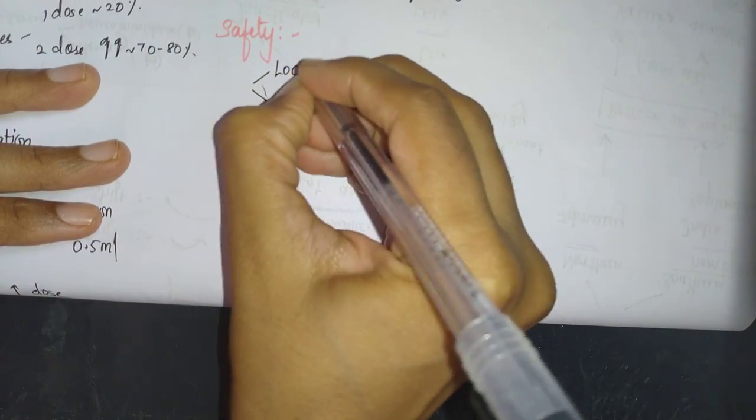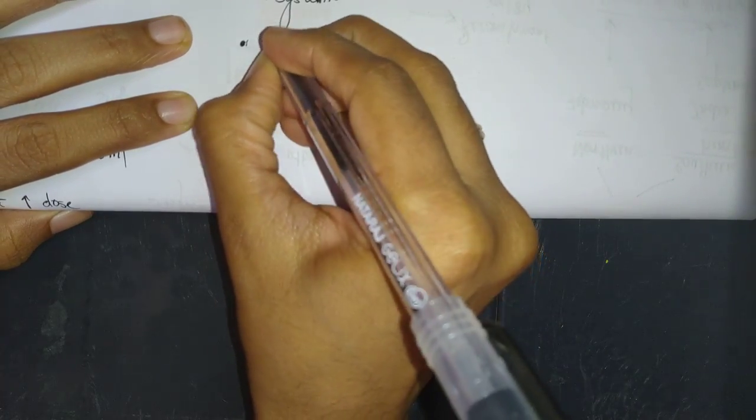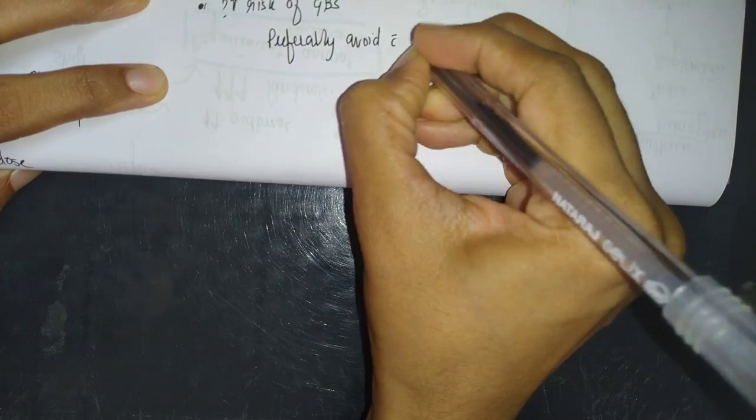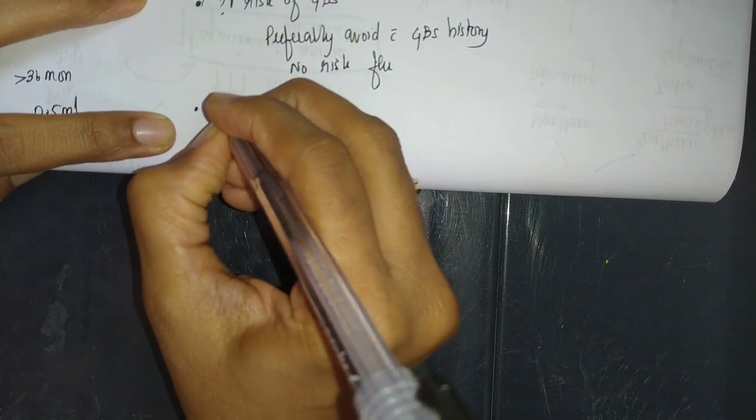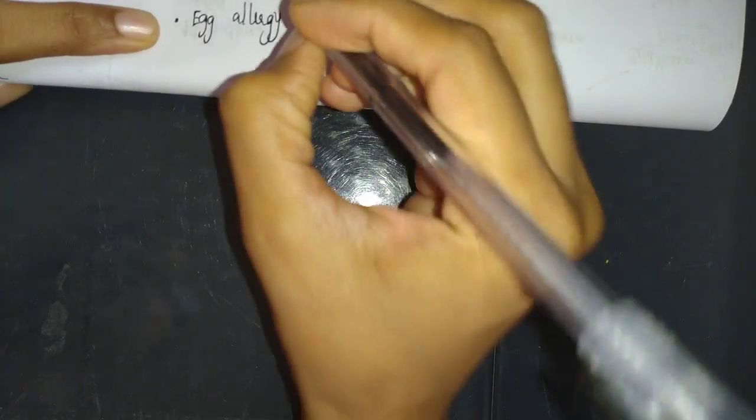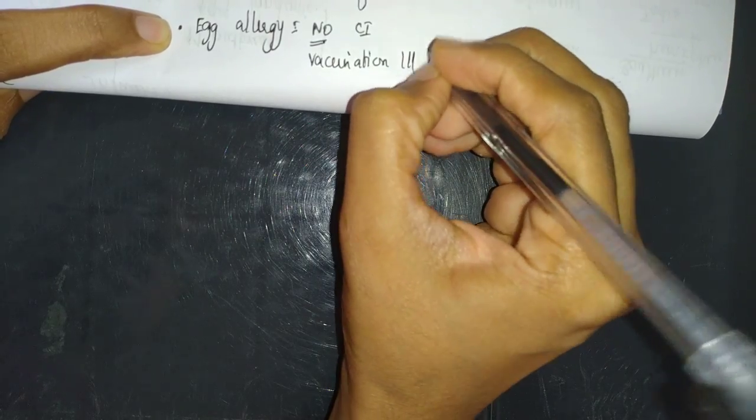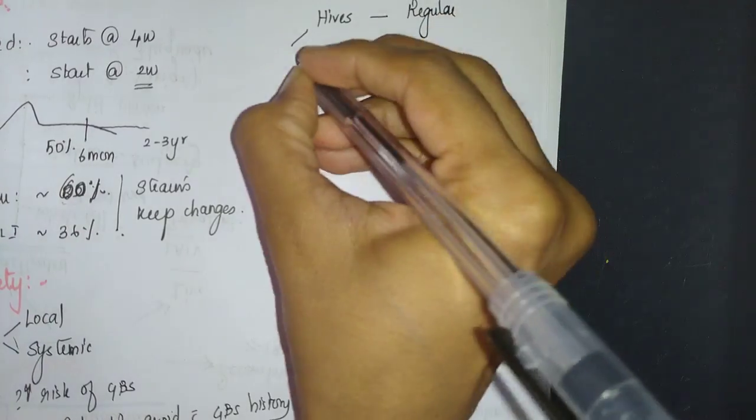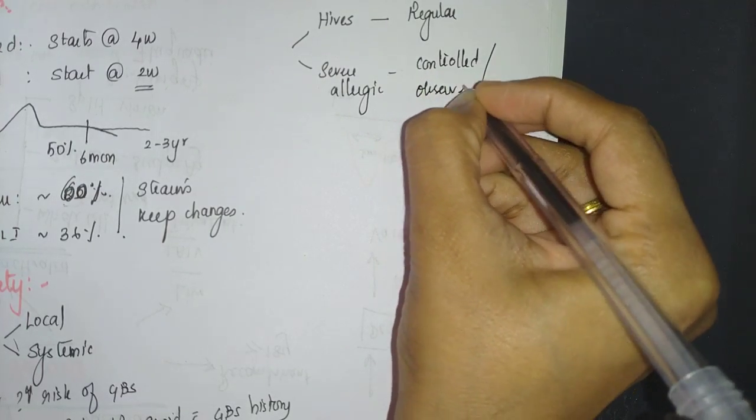What about the safety of vaccination? Any adverse drug reaction—always divide into local and systemic. Some specific things: there is questionable increased risk of GBS, so preferably avoid in patients with GBS history who have no increased risk for flu. Next, commonly asked question is egg allergy. Earlier this used to be contraindicated, but now recent guidelines say there is no contraindication. If the patient is shown to have severe allergic reaction, then in an observed setting you will give this vaccination.